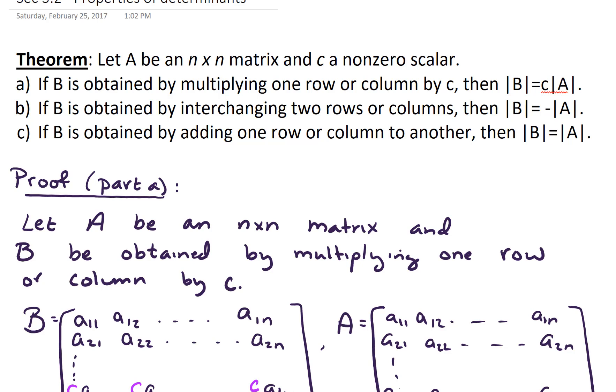Hello, in this video we're going to look at properties of determinants. So we'll begin with the theorem: let A be an n by n matrix and C a non-zero scalar. Three properties follow.